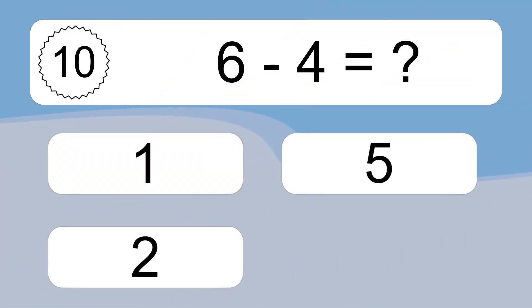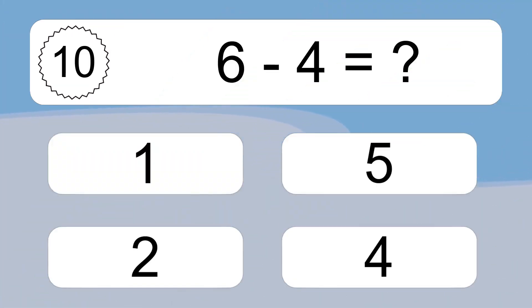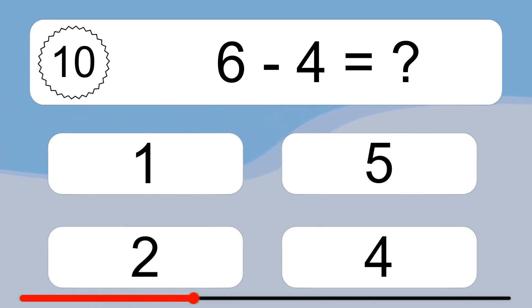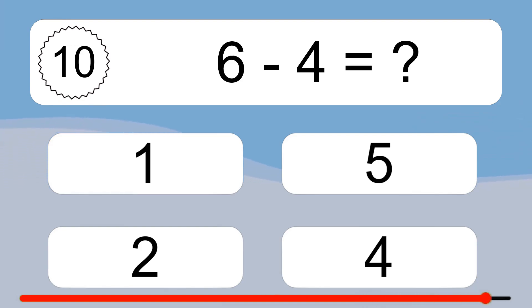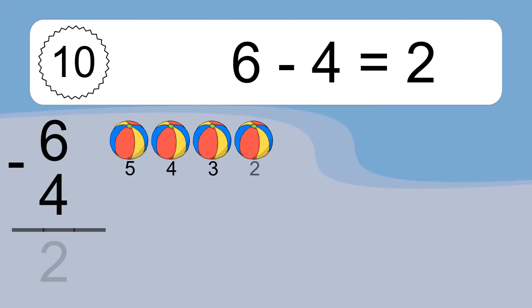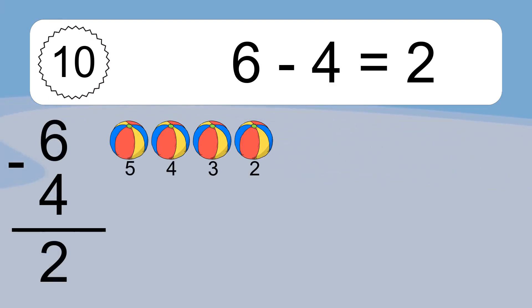6 minus 4 equals what? 6 minus 4 equals 2. Let's count it: 5, 4, 3, 2.